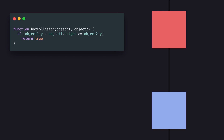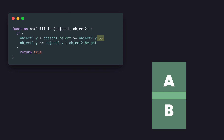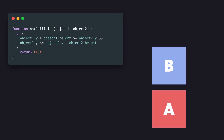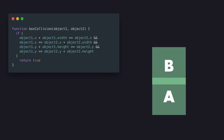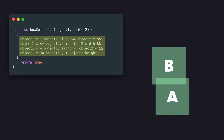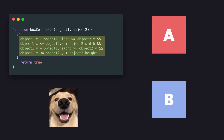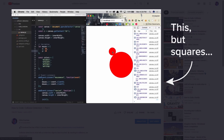To detect collision on the y-axis, we essentially do the same thing but using y-coordinates and our box's heights. So if the bottom side of rectangle A is greater than the top side of rectangle B, the two are overlapping, but we also need that additional conditional that says these two can only be overlapping if the top side of rectangle A is less than the bottom side of rectangle B. By combining these x and y collision detection formulas together with JavaScript AND statements, we have officially coded rectangular collision detection. Now let's do a quick screencast to show how this is possible with two HTML canvas rectangles.